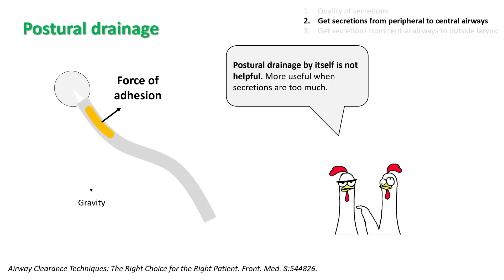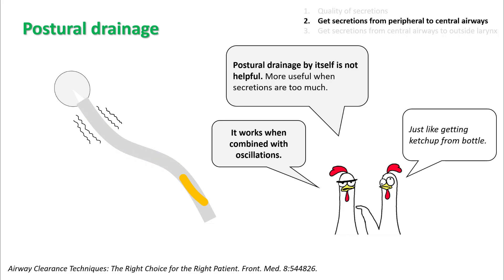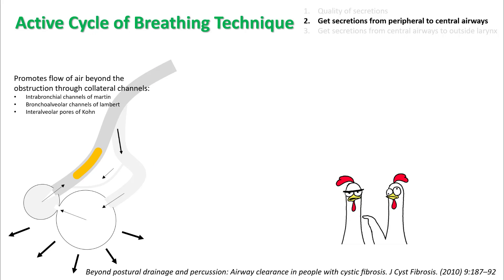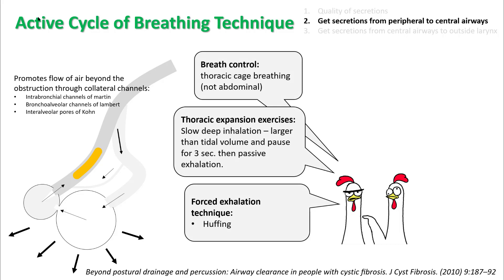Postural drainage is one of the easiest ways to get secretions from peripheral to central airways. However, by itself postural drainage is not helpful — it is helpful when secretions are in large quantities. It works best when combined with oscillation, just like getting ketchup out of a bottle. Breathing techniques promote flow of air beyond the obstruction through collateral channels. The technique consists of taking a slow large tidal volume and pausing three to four seconds, breathing using the thorax as much as possible, and exhaling fast using the huffing maneuver.